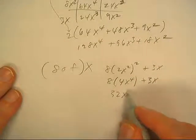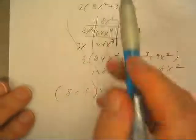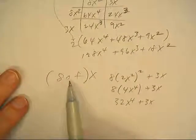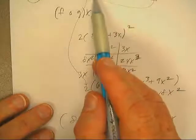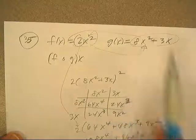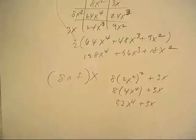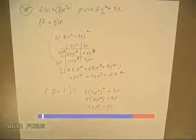32x to the 4th plus 3x. Because on g of f, I'm putting f into the x of g, and I've got to square it. So I didn't have to square a binomial like I did on that one. That one's a lot easier. And there's problem 35. We'll return.